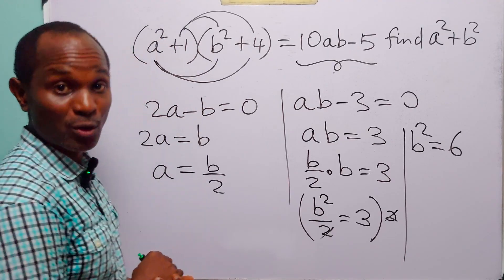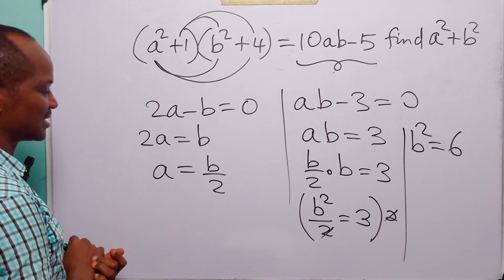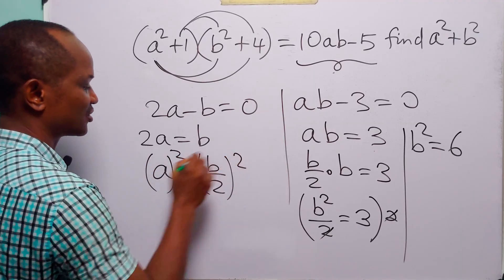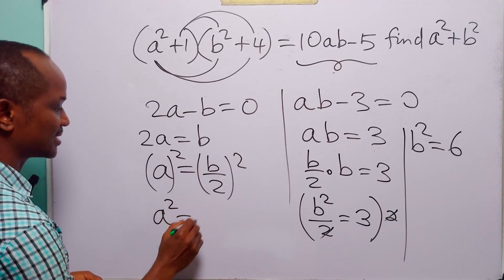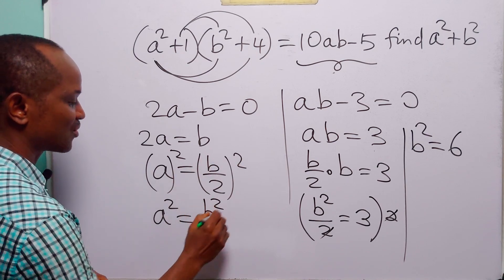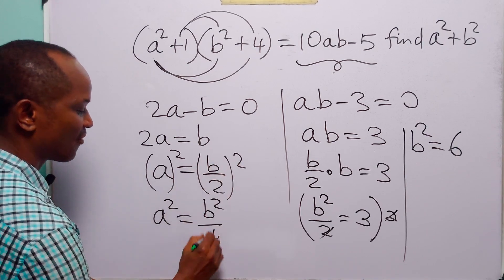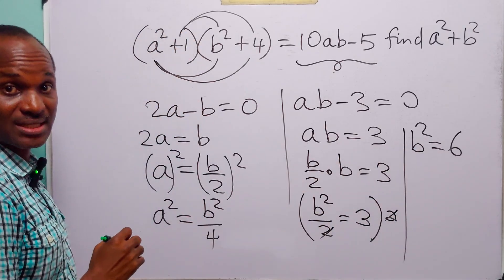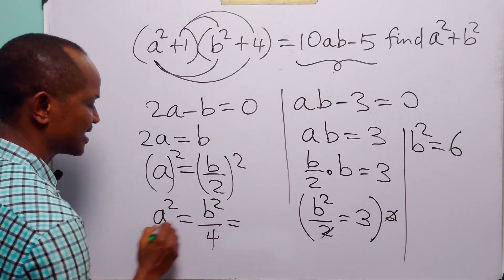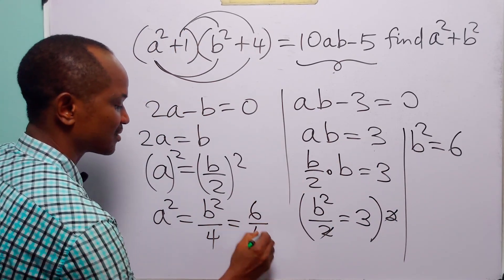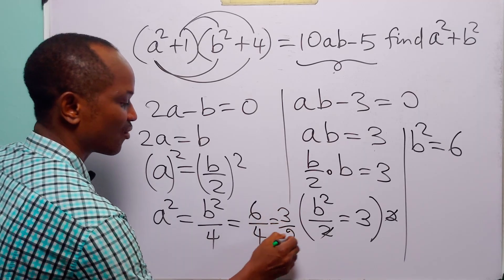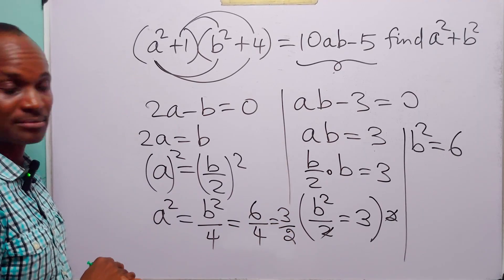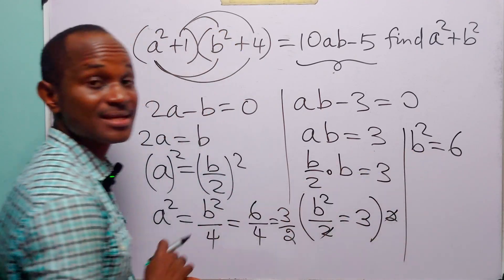Now that we have found b squared, let us return to the equation a equals b over 2 and square both sides. We get a squared equals b squared over 4. We already know that b squared equals 6, so a squared equals 6 over 4, which simplifies to 3 over 2. So we have found a squared equals 3 over 2 and b squared equals 6.